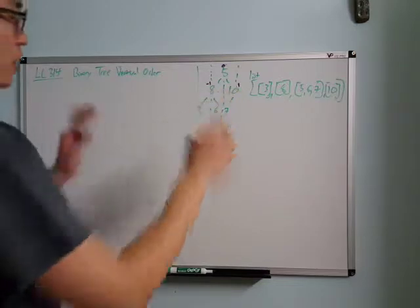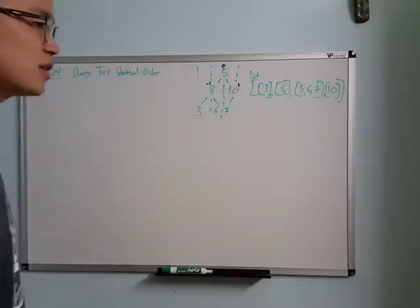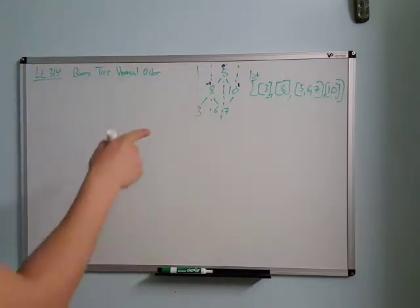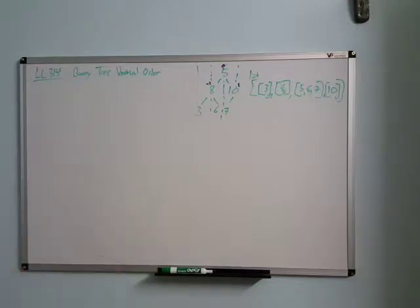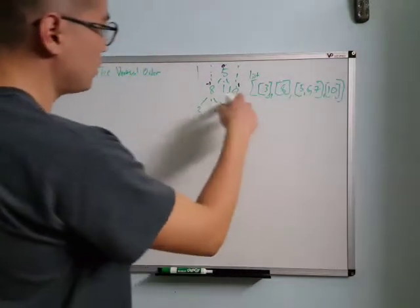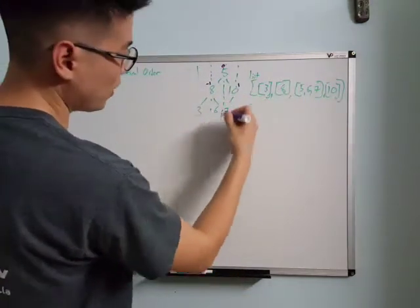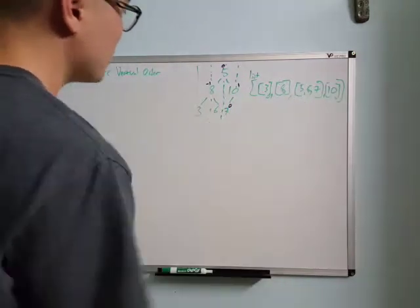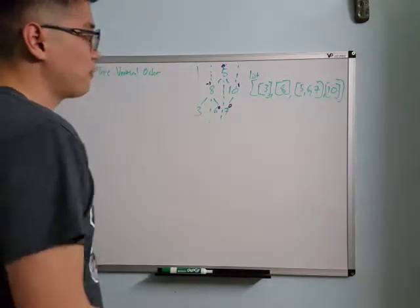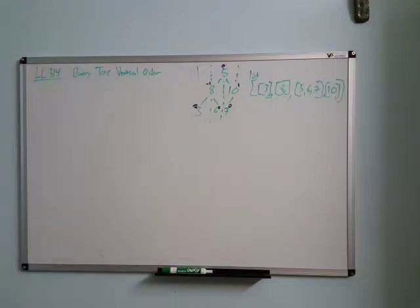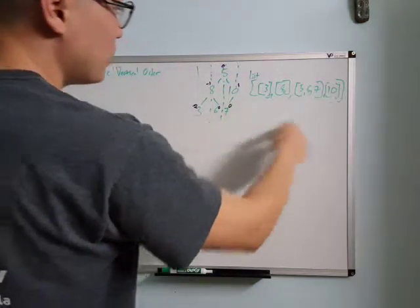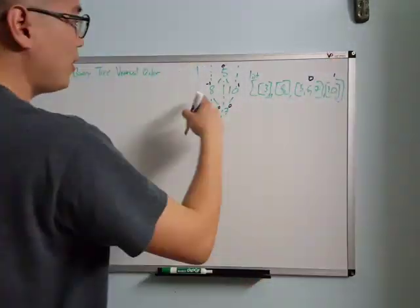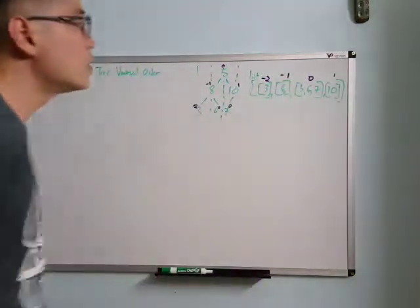From there we can recurse out or continue iteration — there are two different implementations. Both work conceptually, but I found out why one passes the test cases and the other doesn't. So here we're at negative one and one. We decrement one going left to seven, back to zero. Seven and five are in the same column, which they should be. Increment one to go to six, which is zero, then decrement one to go to three, which is negative two. So five, six, and seven are together; ten is at one; eight is at negative one; three is at negative two.